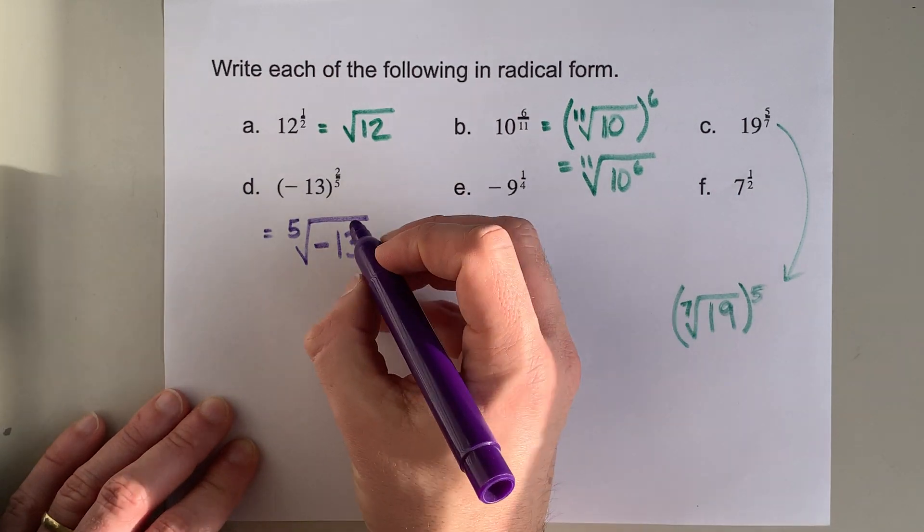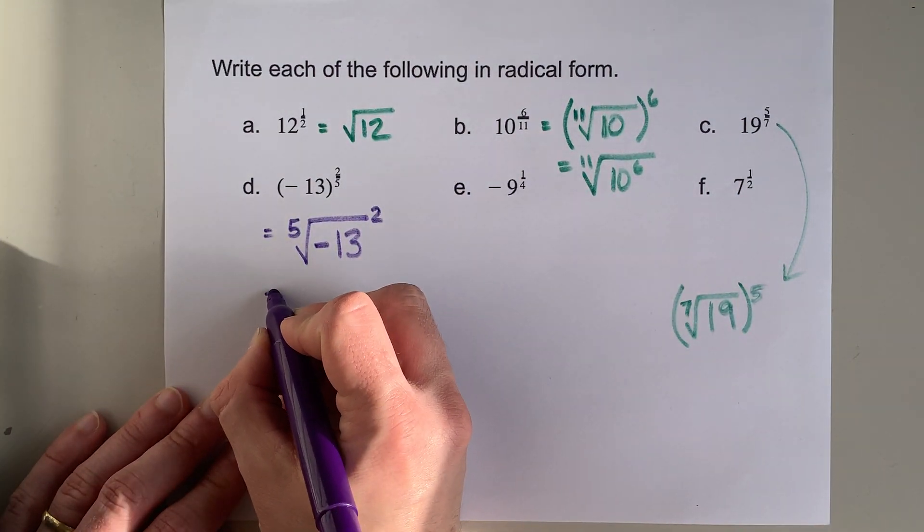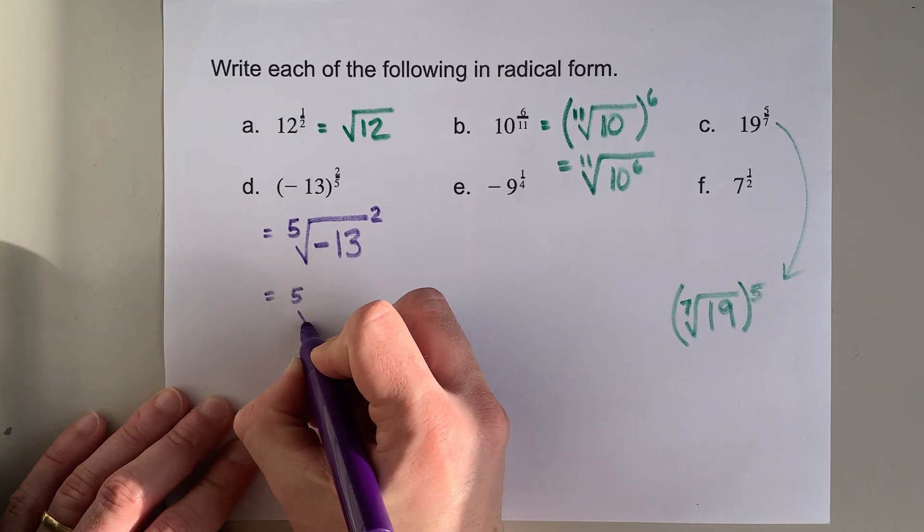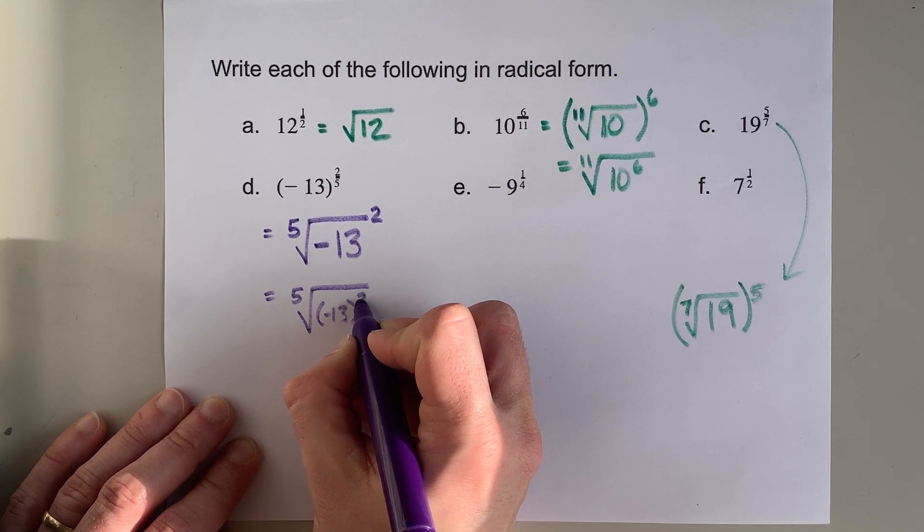And then the power you're applying to that is squaring. That will be equivalent to taking the fifth root of negative 13 squared.